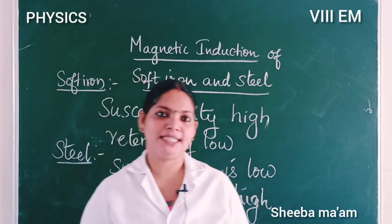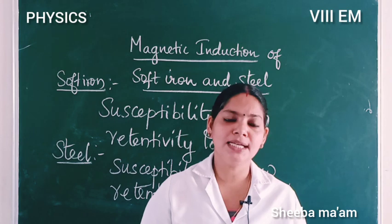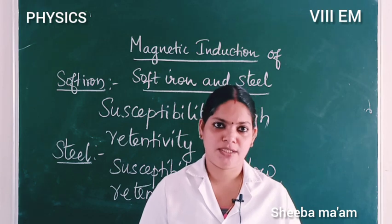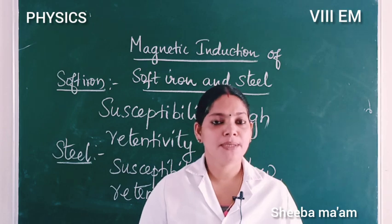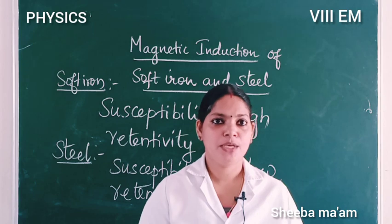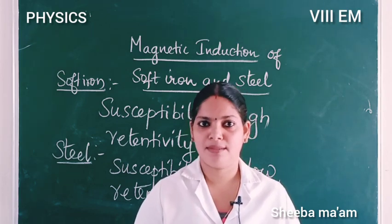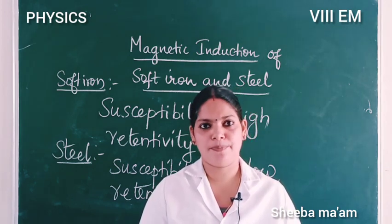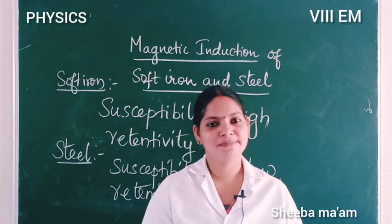So, how do we summarise magnetic induction? In the presence of a magnet, a magnetic substance acquires magnetism — this is known as magnetic induction. The magnetic force acquired is known as induced magnetism. Soft iron has high susceptibility and low retentivity; steel has low susceptibility and high retentivity. That's all. Thank you.